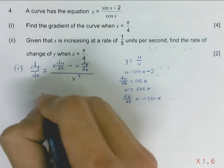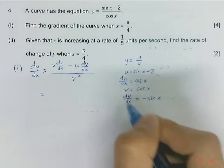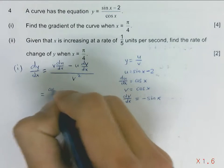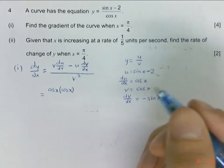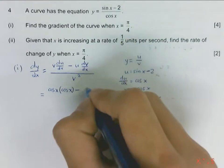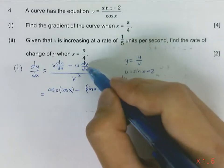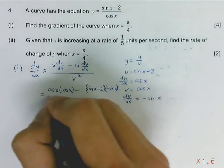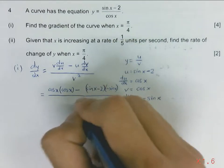So following the formula, we can express this gradient function using the terms we have. So it will be cosine x times du/dx, which is also cosine x, minus u, which is the numerator, sine x minus 2, times dv/dx, which is minus sine x. And the entire expression over v squared. V is cosine x, so v squared will be cosine squared x.